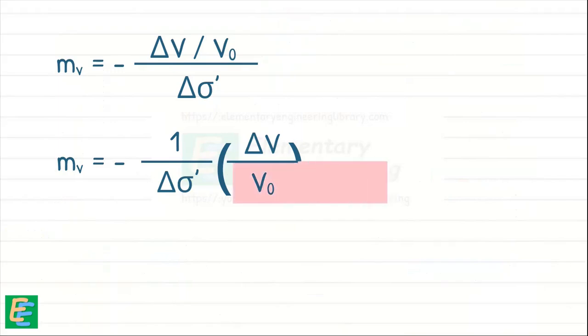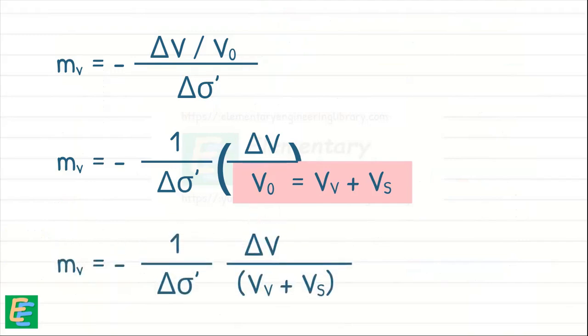Here, total volume of the soil, V0, can be expressed as the sum of volume of voids and volume of solids. If we divide both the numerator and denominator by volume of solids, Vs...